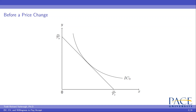If prices change or income changes, you will most likely be able to consume on a higher indifference curve if prices decrease or income increases, or you may have to consume on a lower indifference curve if prices rise or income falls. We use this framework to show in a microeconomic sense what happens when there is a disruption of an environmental amenity.